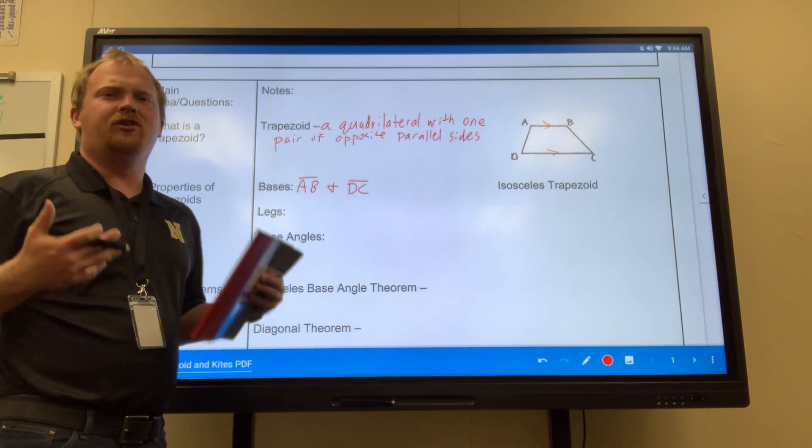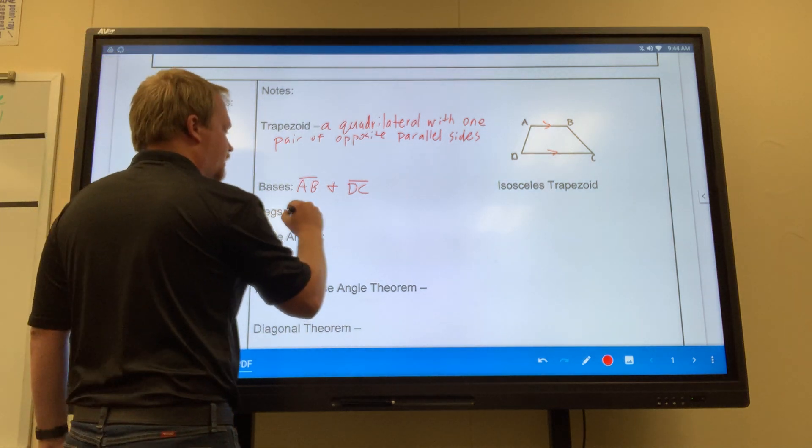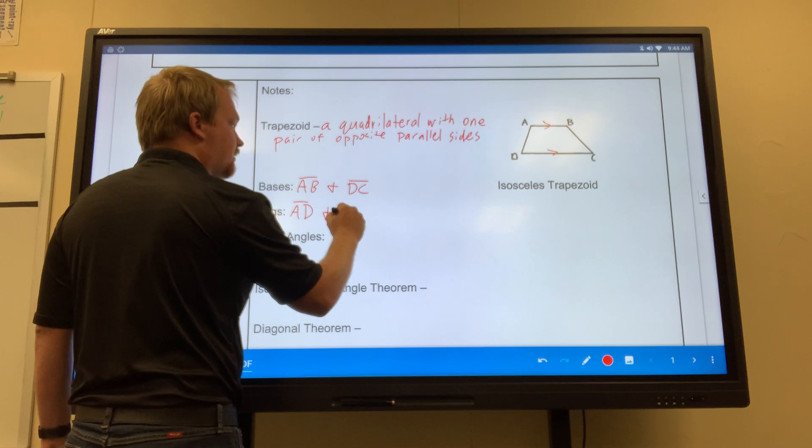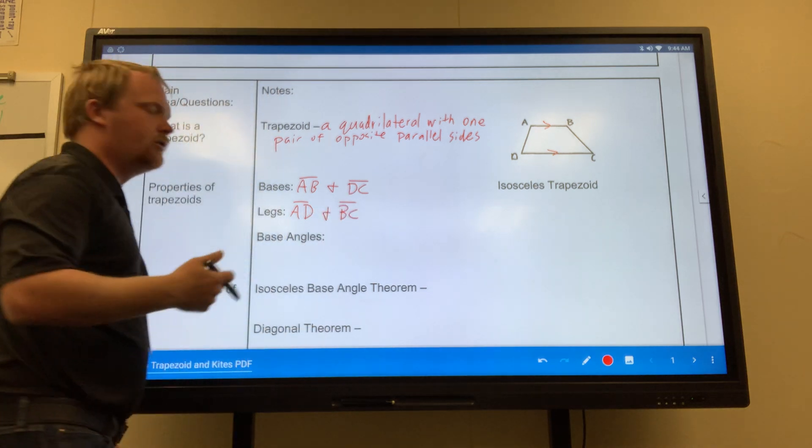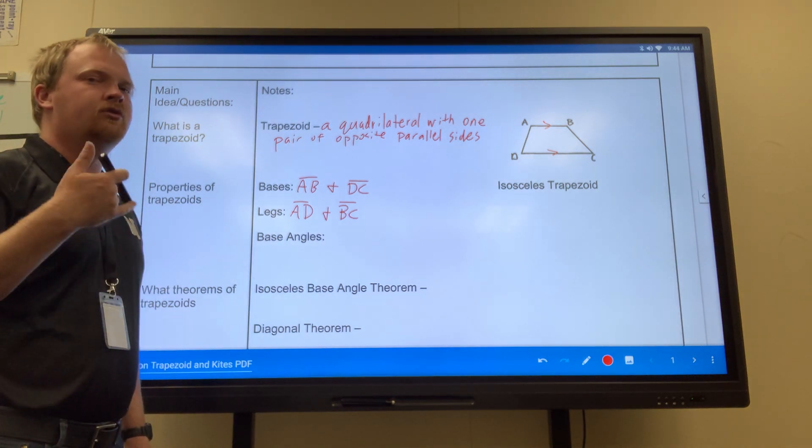Now, what are my legs? Those are the non-parallel sides. So for example, AD and BC. Those are my two non-parallel sides, which we'll call the legs.